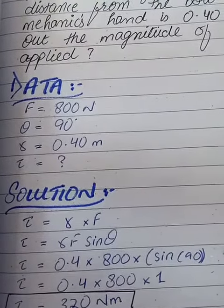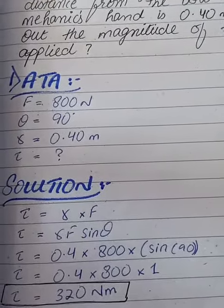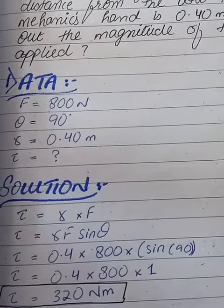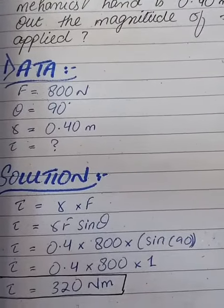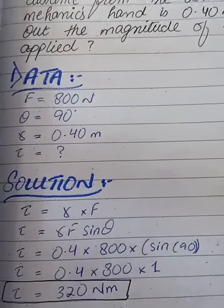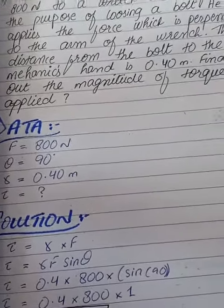The torque formula is R cross F. Torque equals R times F times sin theta. The calculation is 0.4 times 800 times sin 90, which equals 0.4 times 800 times 1. Final answer is 320 Newton meter.